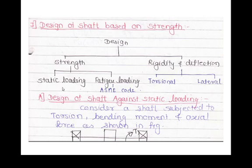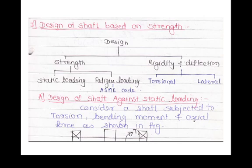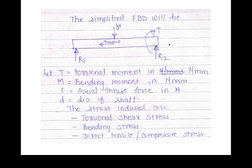Now let us see how a shaft is designed against static loading based on strength. In this diagram, a shaft is mounted between two bearings — the cross symbol represents the bearings — and a pulley or gear is mounted at the center with torque being applied. A free body diagram (force diagram) is used for analysis.